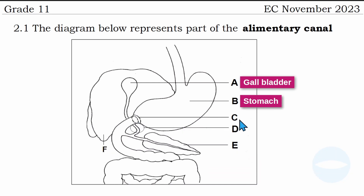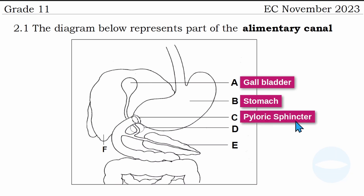And then number C is a valve. This valve is between the stomach and the small intestine, or the duodenum. The duodenum is the first part of the small intestine. This valve is called the pyloric sphincter. It closes if digestion must take place inside the stomach, and it opens to allow the chyme to move out and travel to the small intestine.